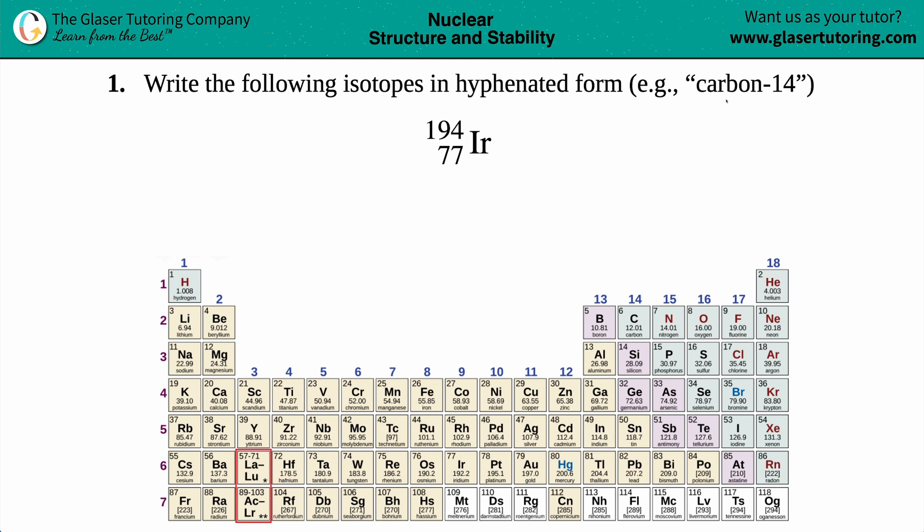We just need to write it in terms of the element's name. For the example, they give us carbon and then a number. So we need basically two things with a hyphen in front of it.